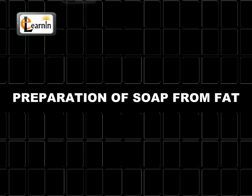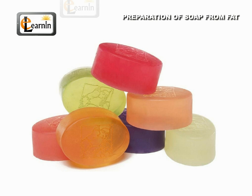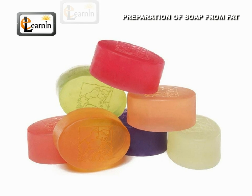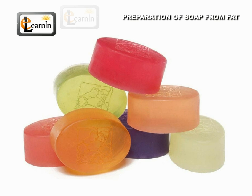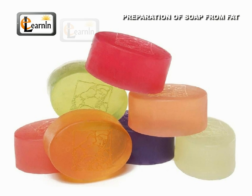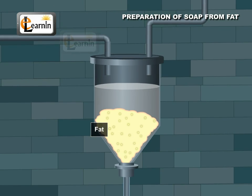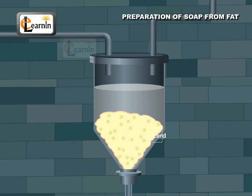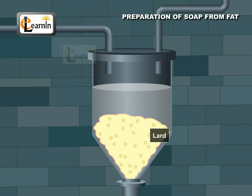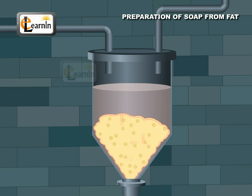Preparation of soap. The preparation of soap from fats is very simple. The only thing needed is to add some fat, for example lard, to a solution of sodium hydroxide and heat the mixture for some time.